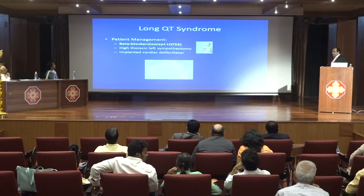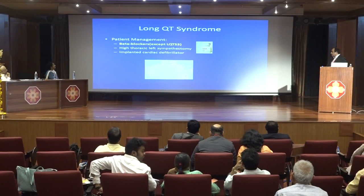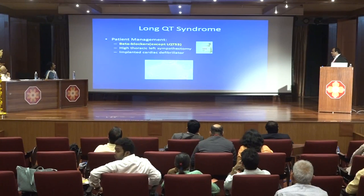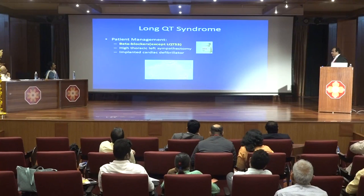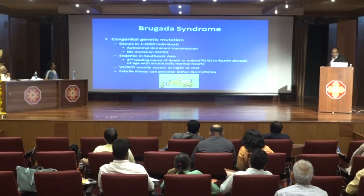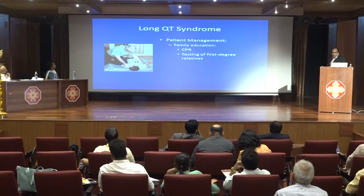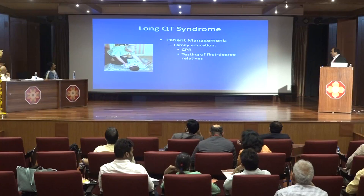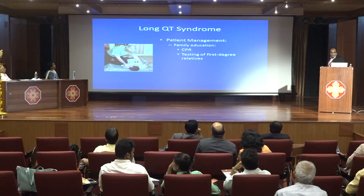Treatment includes beta blockers, except in long QT type 3. High thoracic left sympathectomy can be done, or ICD may be required. Families should be educated for CPR, and genetic studies should be performed in first-degree relatives, with screening done in those cases.